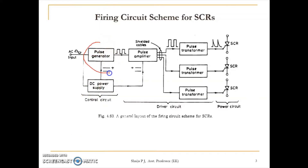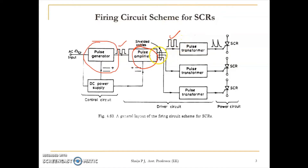The pulse generator generates pulses according to the control strategy. An AC input is fed to it, and a DC biasing or reference signal is taken from the control circuit. The pulse generator output is passed to the pulse amplifier, whose amplified signal is sent via shielded cables to the pulse transformer, which then feeds into the SCR.